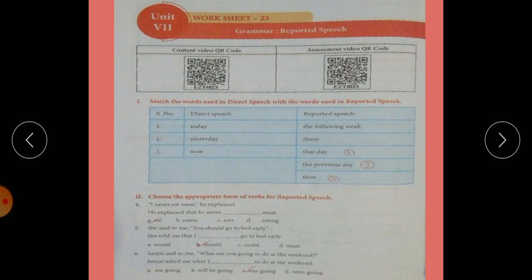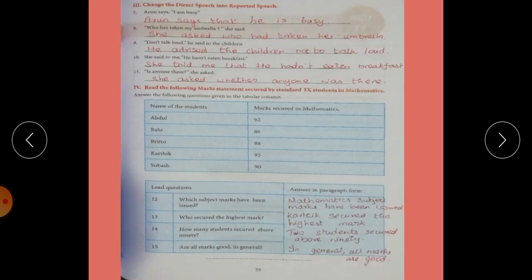Sixth one. Sanjay said to me what are you going to do at the weekend. It is the question type interrogative. Sanjay asked me what I was going to do. Past tense changes, and I am becomes I was going. That's the correct answer. Next.